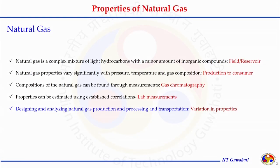From the production side to the consumer, the composition varies because of field conditions and because of several processes applied to refine the natural gas. The composition of natural gas can be estimated by analytical techniques; one of the analytical techniques is gas chromatography. If the compositions are known, we can estimate several properties at different temperature and pressure conditions.